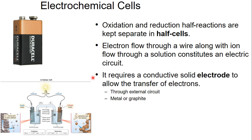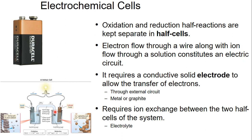We also need some kind of electrode to allow the transfer of electrons. Here we're just using a metal wire. You also need some way to allow ions to flow, because if you didn't have what is called a salt bridge, your battery would die incredibly fast because the charges would be neutralized.